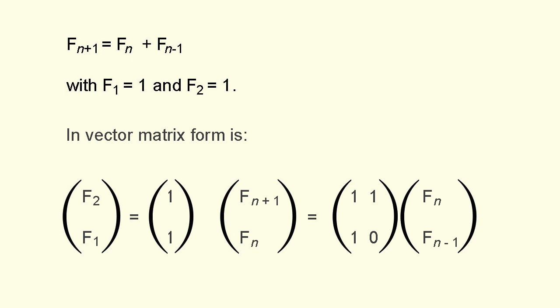We can set up our defining relations as a matrix vector product. The starting values F1 and F2 can be represented as the vector 1 1 and we can encode the recurrence relation as the matrix product shown here. When we multiply through the first row of the matrix times the vector gives F sub n plus F sub n minus 1 equals F sub n plus 1 which is the generating formula for the Fibonacci sequence and multiplying the second row gives simply F sub n equals F sub n.